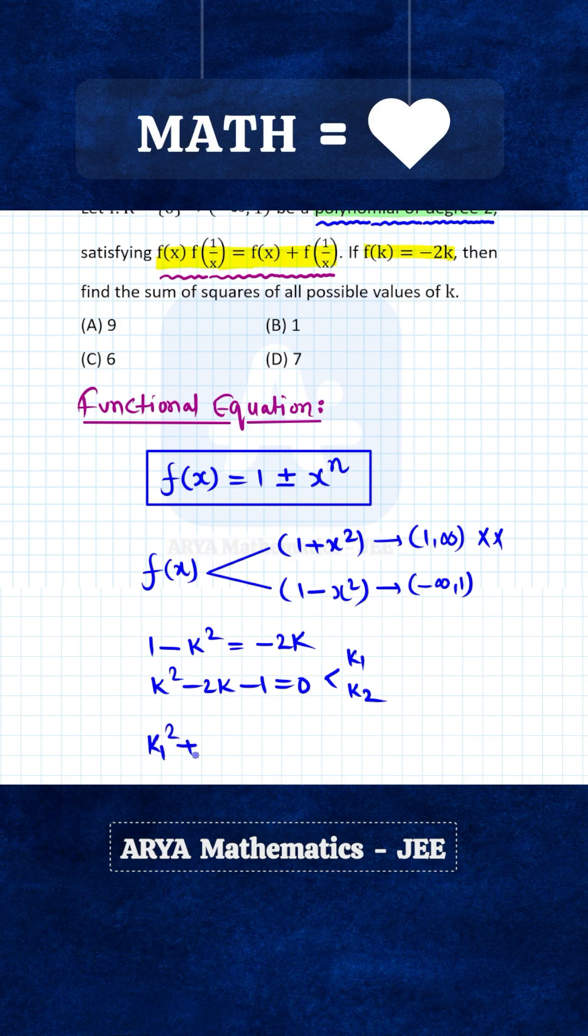Now k₁² + k₂² you can write as (k₁ + k₂)² - 2k₁k₂. Clearly you can see that k₁ + k₂ will be 2 and k₁·k₂ is -1. So therefore this quantity will be 2² = 4 minus -2, that is 6, and therefore the correct answer for this problem is option C.